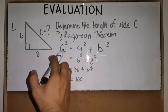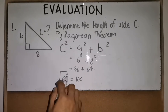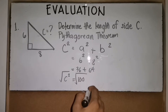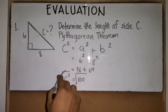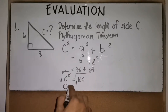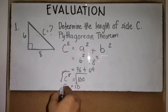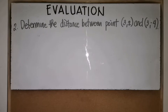To solve for c, we cancel the exponent by taking the square root of both sides. The square root of c² is c, and the square root of 100 is 10. So the final answer is c = 10.